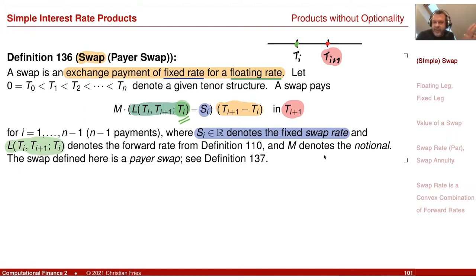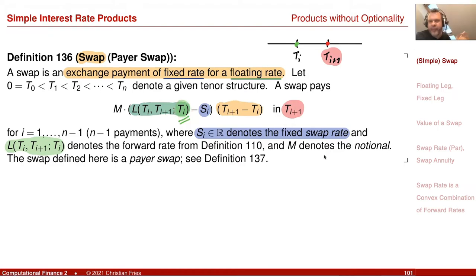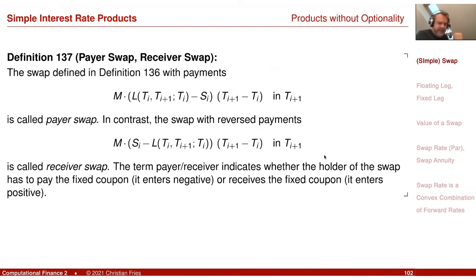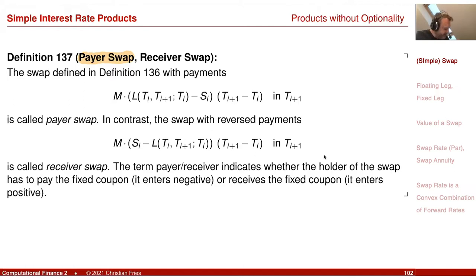Since this is just a linear combination of things we have already valued, I can immediately write down the value. The value is this amount multiplied with the zero coupon bond price corresponding to the payment time, where I replace the fixing time with the valuation time — because that is what we proved for the floating rate payment. In the definition I had a payer swap. This object is called a payer swap because it pays the fixed rate. Payer or receiver relates to who receives the fixed rate or who pays the fixed rate. There is also the receiver swap, which is just flipping the payments — it's a minus M.